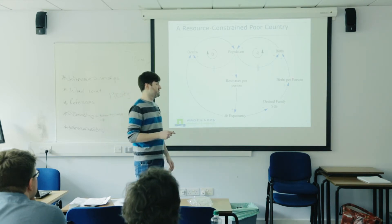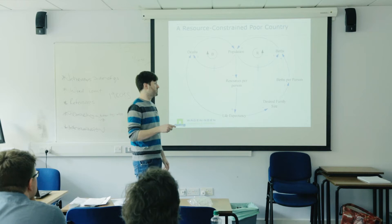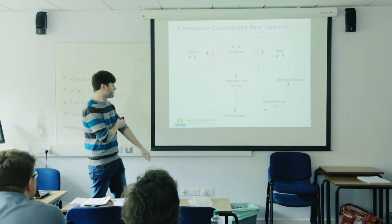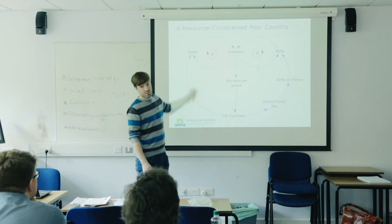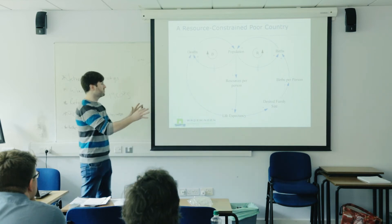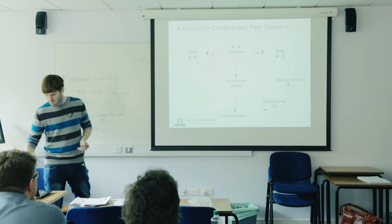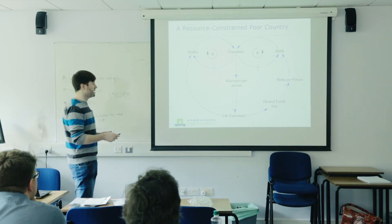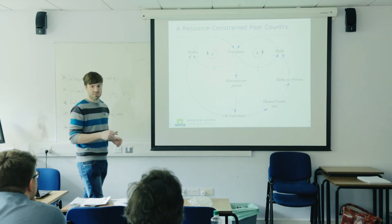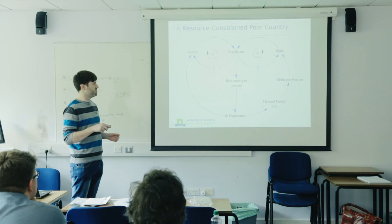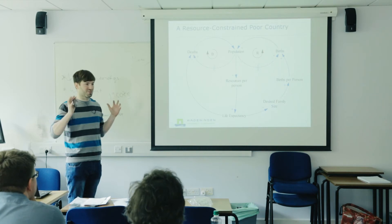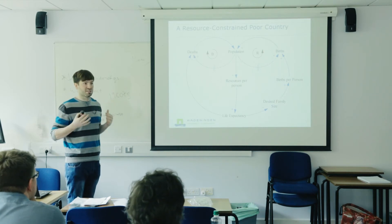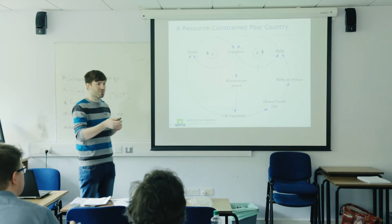Of course the higher the family size, the more births in general. Also, the higher the life expectancy, the fewer deaths. So we can make these observations. What about the feedback loops — is the outer loop balanced or reinforcing? It's a vicious circle — it goes on and on, we get less and less resources and people still make more and more children.